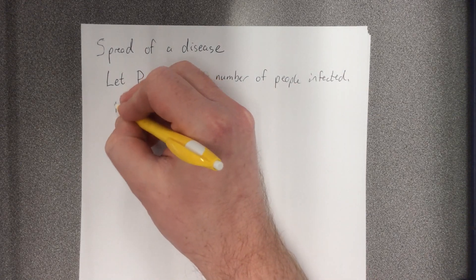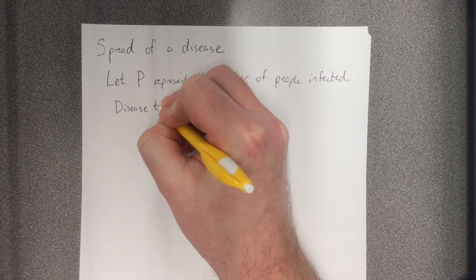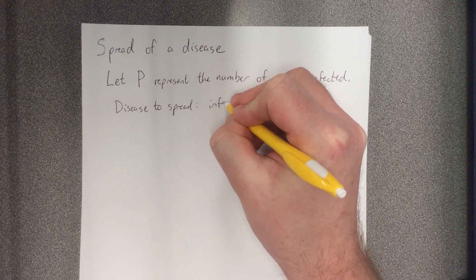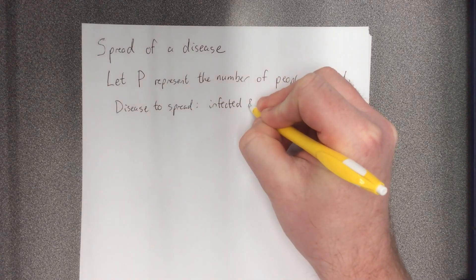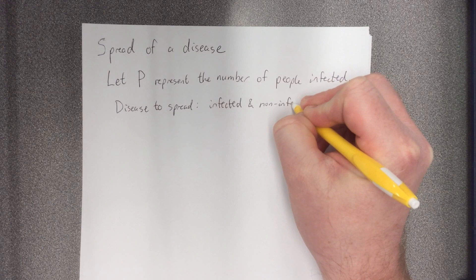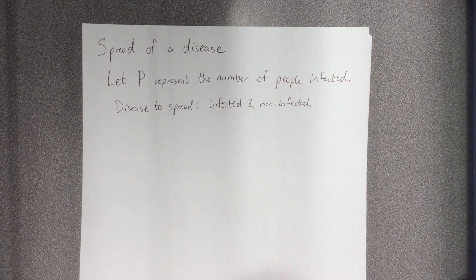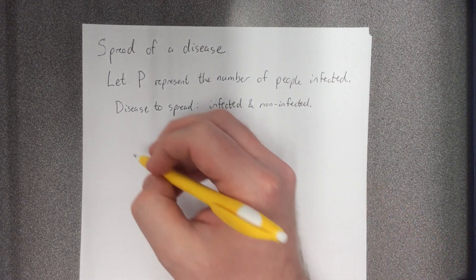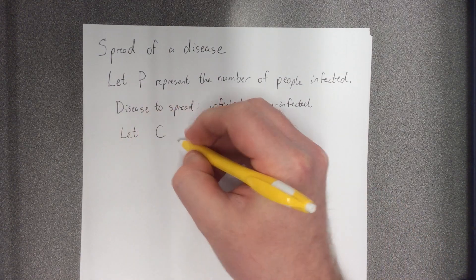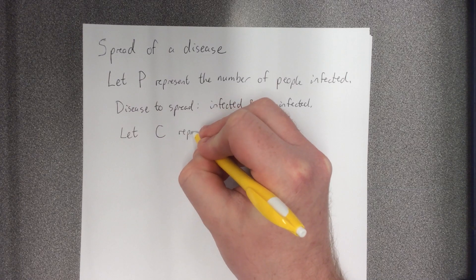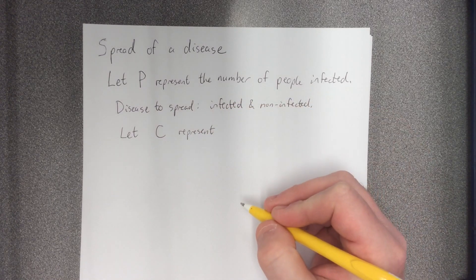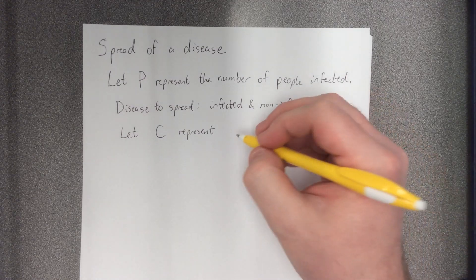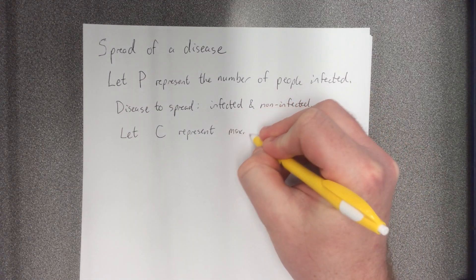In order for the disease to spread, that means that we would need an infected person and a non-infected person to interact with each other. So typically the way that we model this is we say let C represent what's known as a carrying capacity, basically a maximum possible population for the spread of a disease.